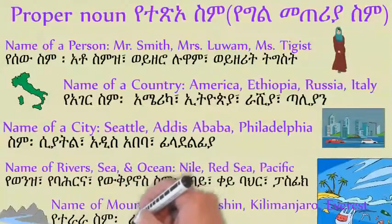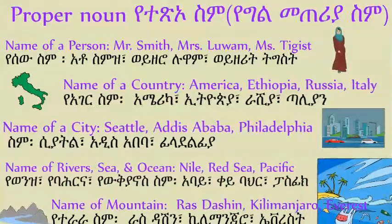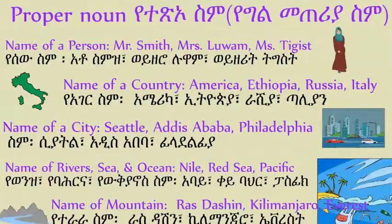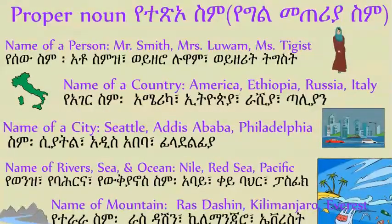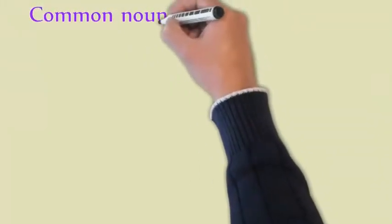So, what did we say? Proper nouns — they are the name of a specific person, country, city, river, sea, ocean, or mountain. We use capital letters to identify those proper nouns in English.